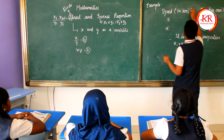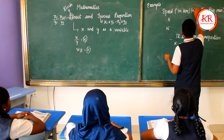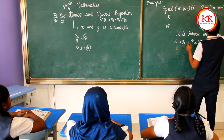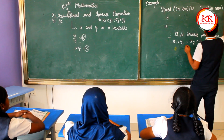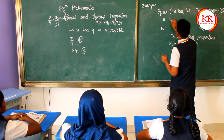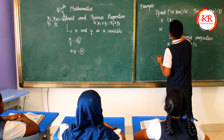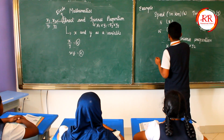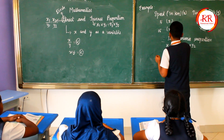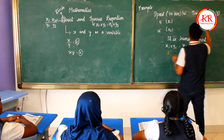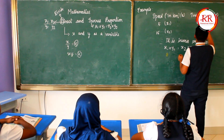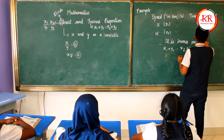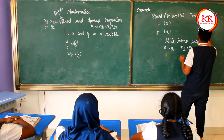Now, this is x1 on one side and y on the other side. We have x1, x2, y1, and y2 identified in the problem.